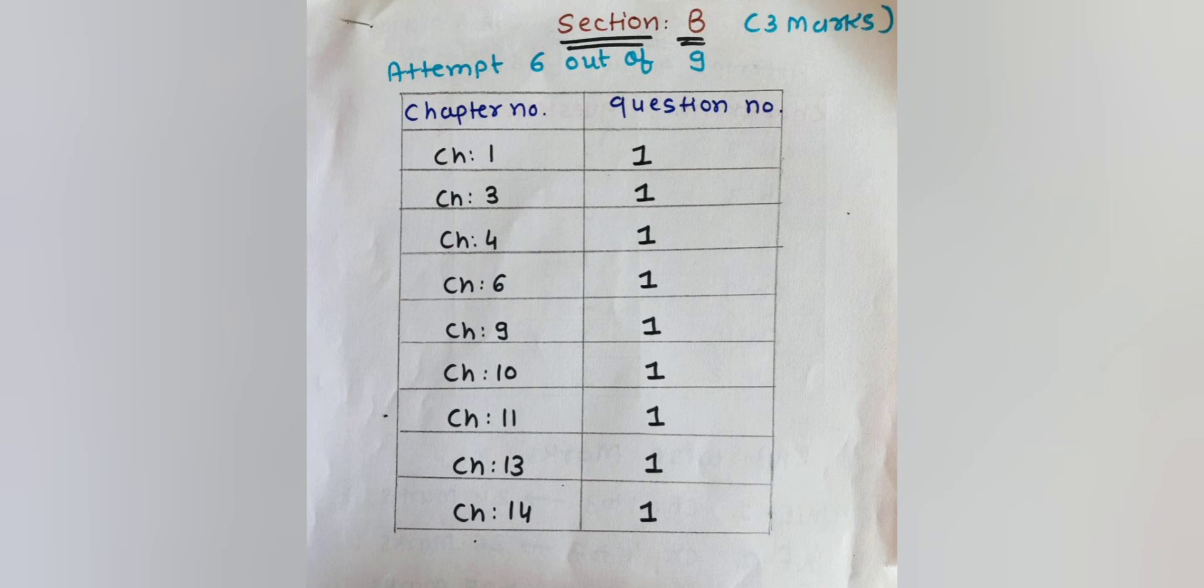Section B covers 3 marks questions. You have to attempt any 6 out of 9. From Chapters 1, 3, 4, 6, 9, 10, 11, 13 and 14, one question will be asked from each.